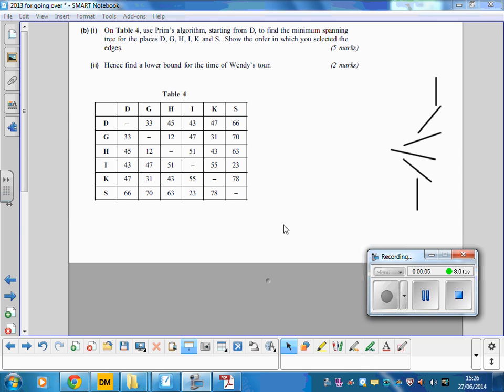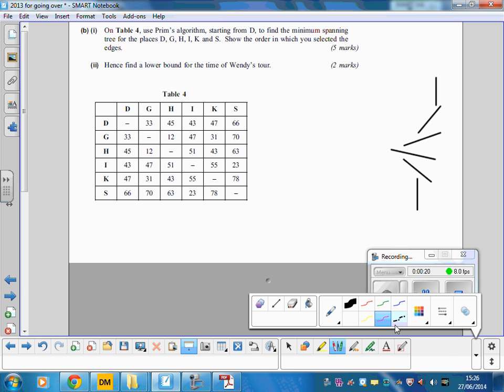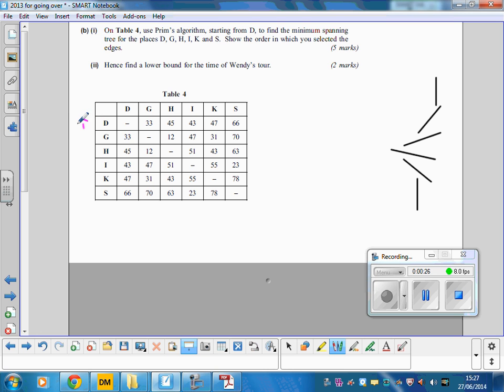The second bit of question 4 asks us to do Prim's algorithm starting from D to find a minimum spanning tree for these edges on table 4. Using Prim's, we're starting from D, so we label D up as vertex 1. We don't want to come back to D, so we'll just pop a line through D there and join D onto our beginning of our spanning tree.